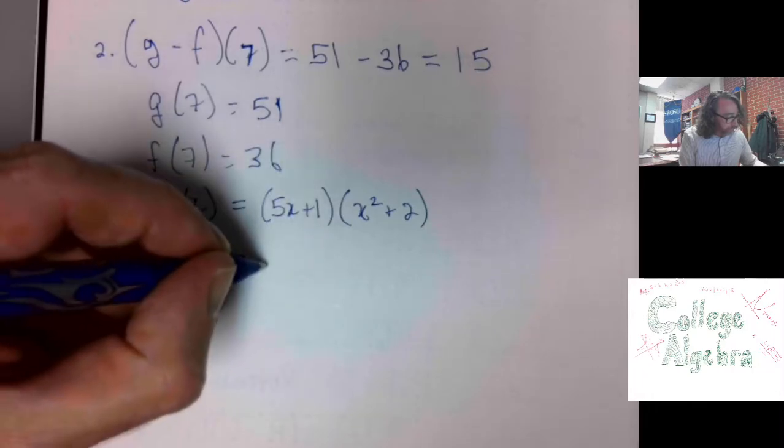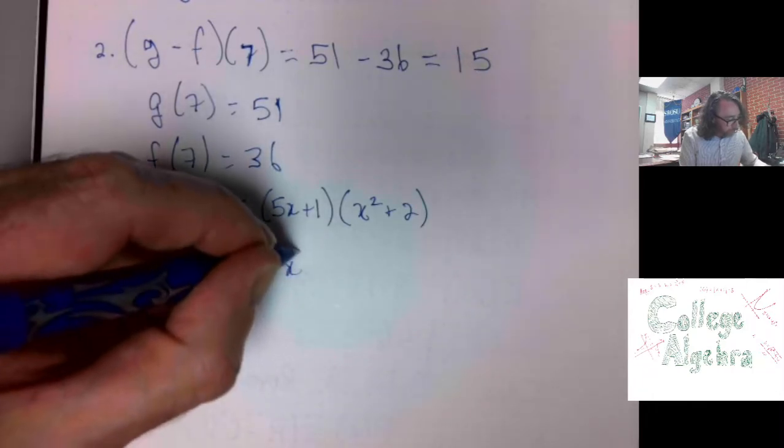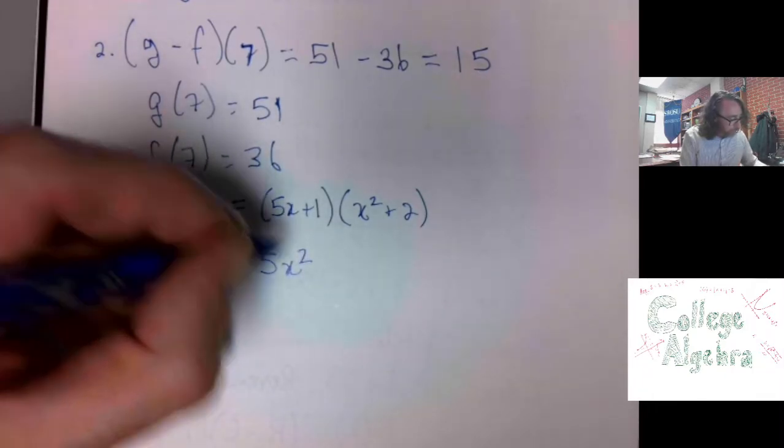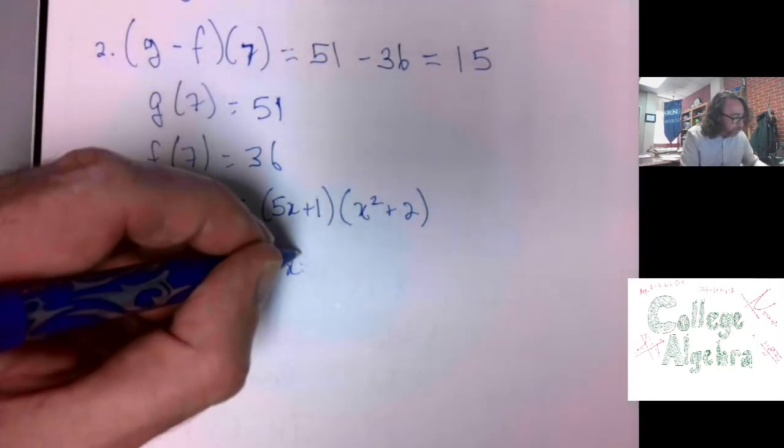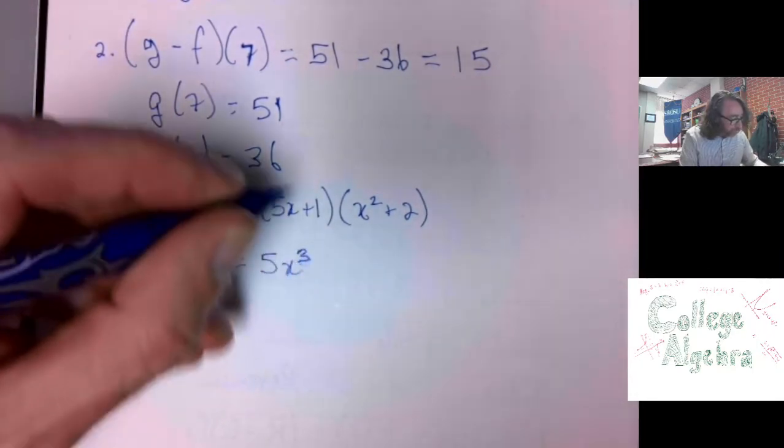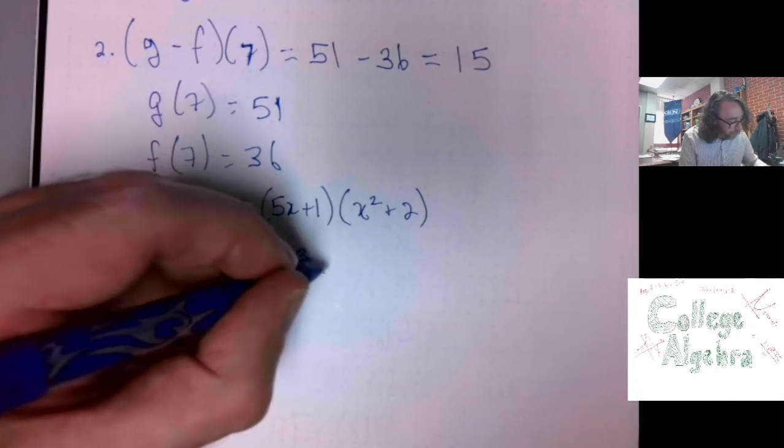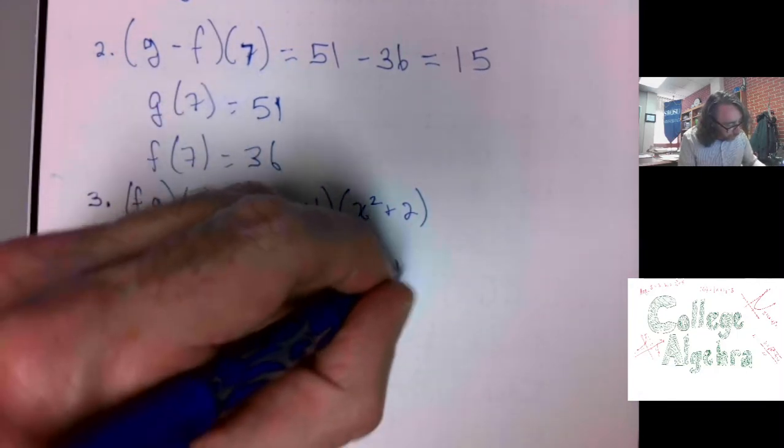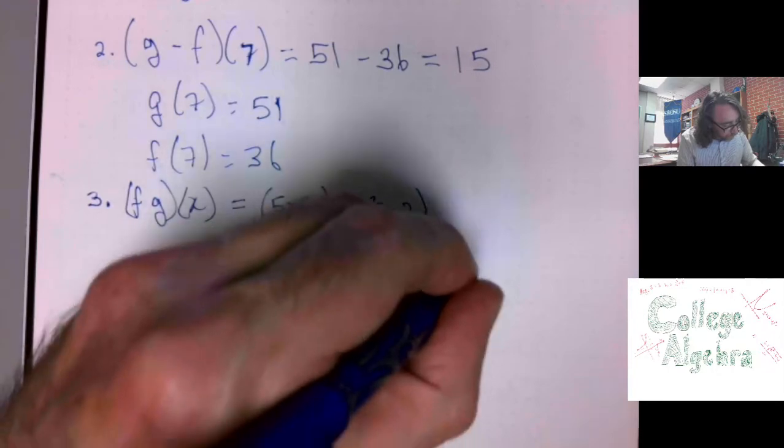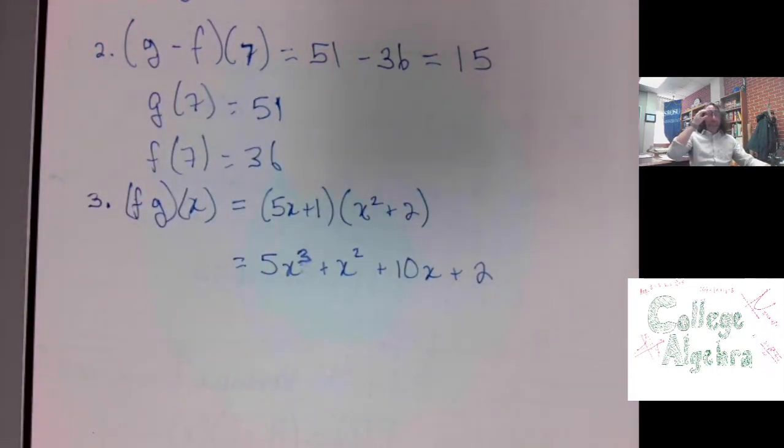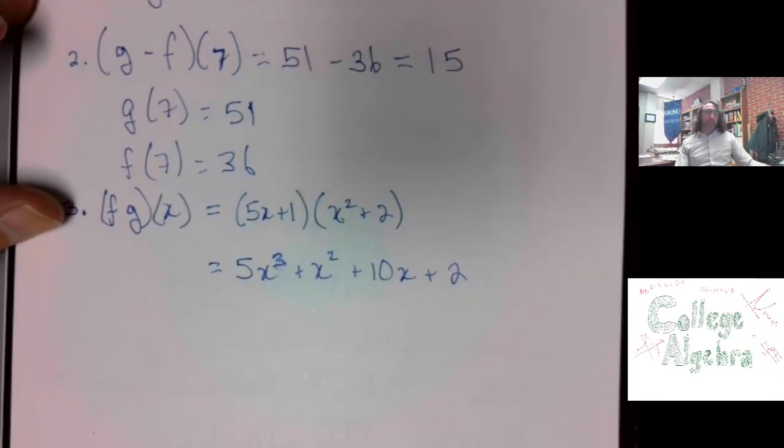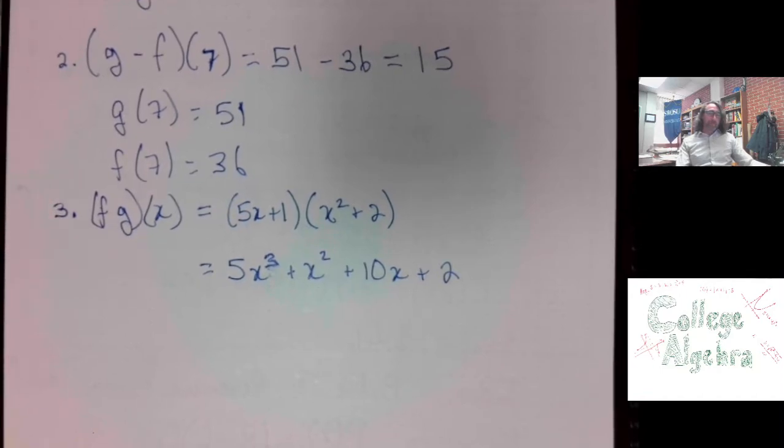Now, I can do the arithmetic here. I get 5x squared. Nope, that's 5x cubed, because it's 5x times x squared. So, 5x cubed plus x squared plus 10x plus 2. There is my resulting product.